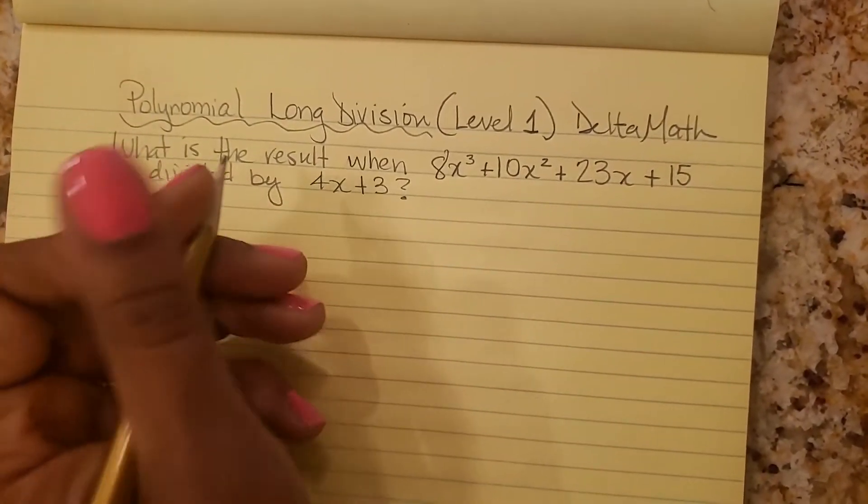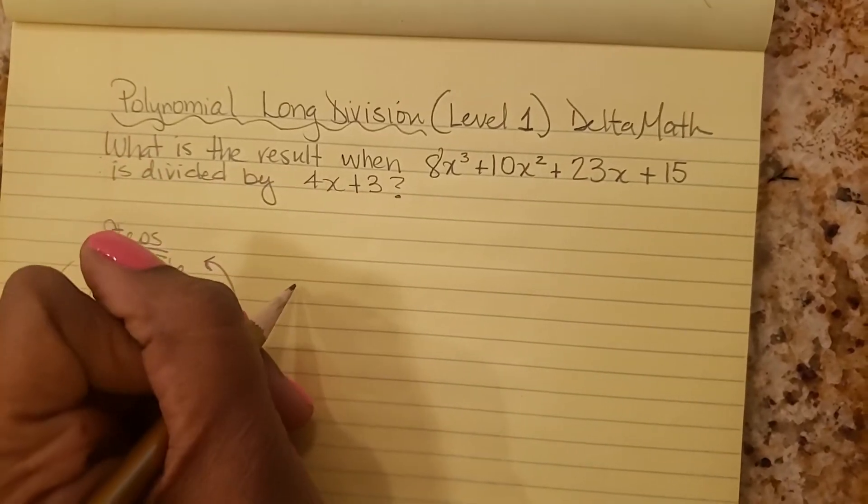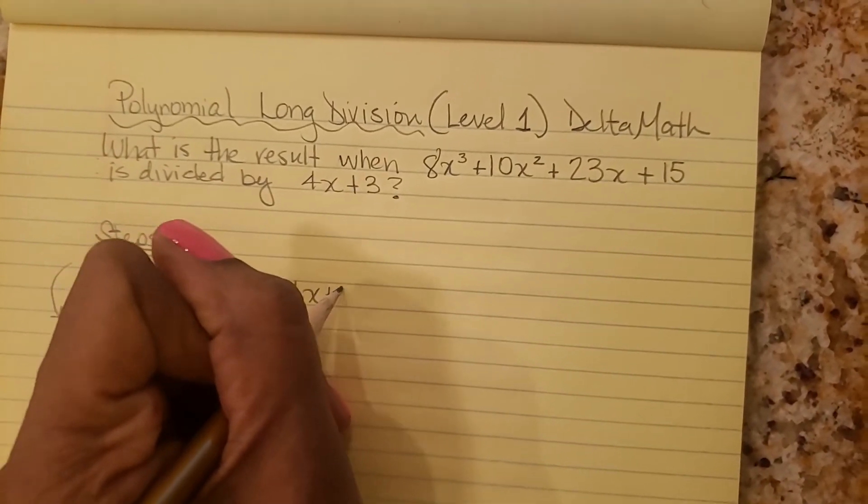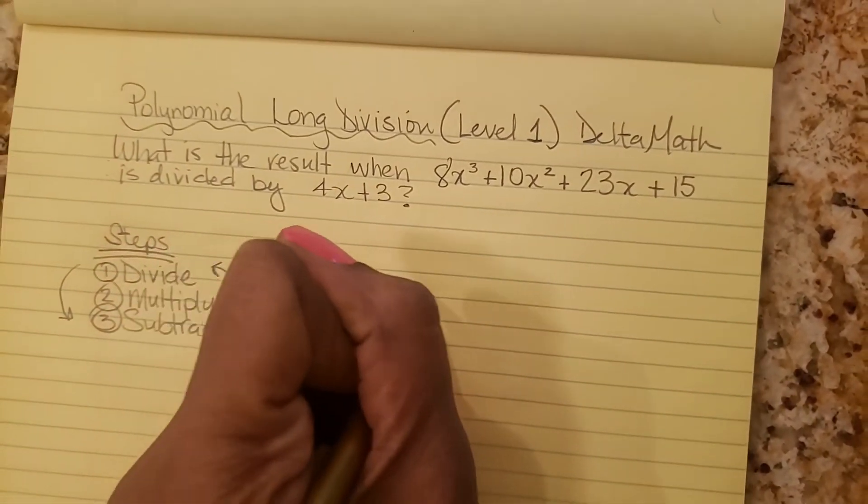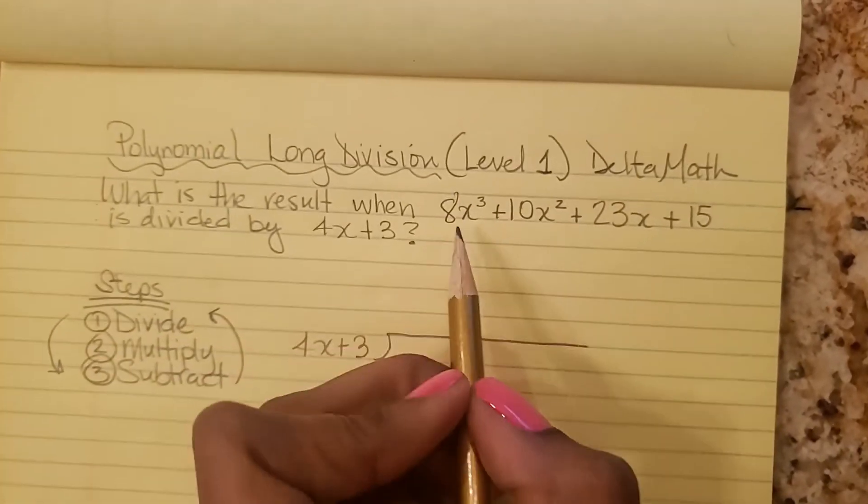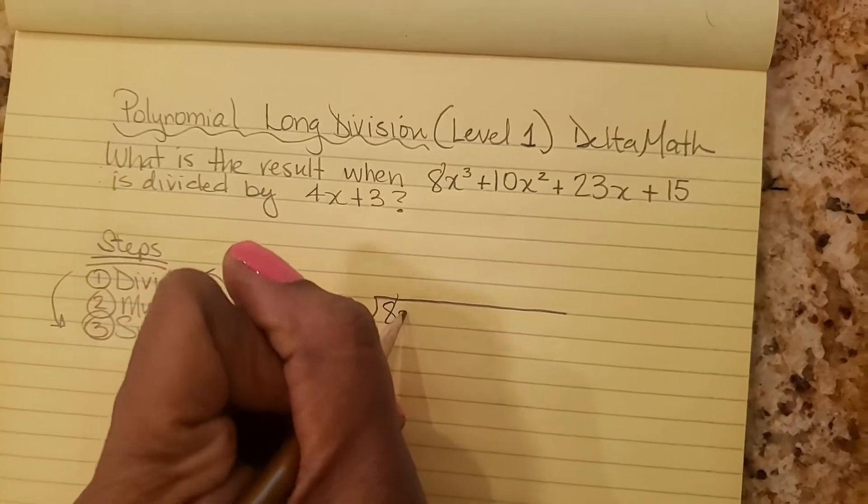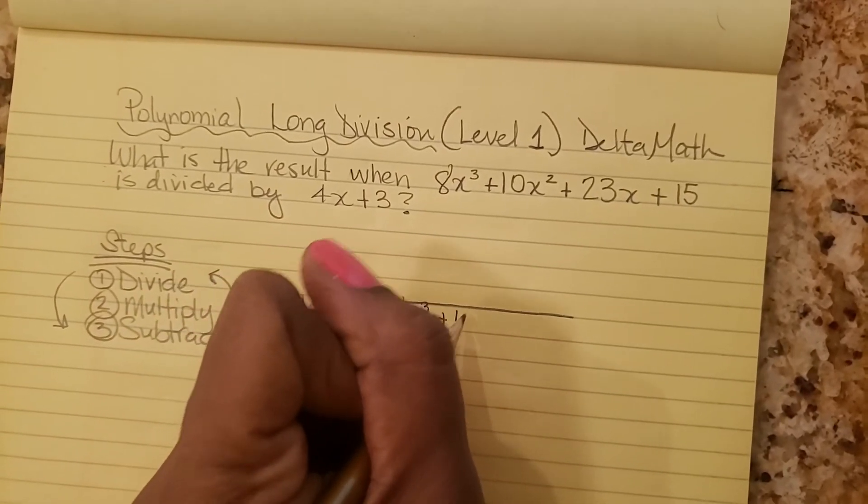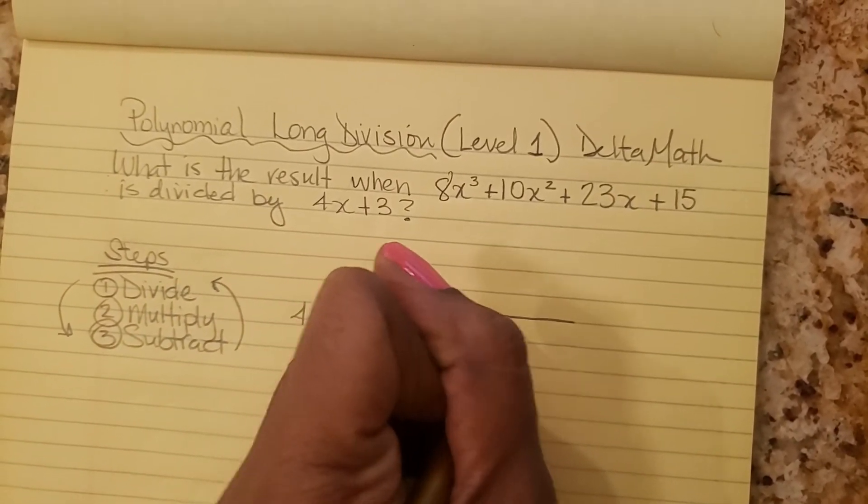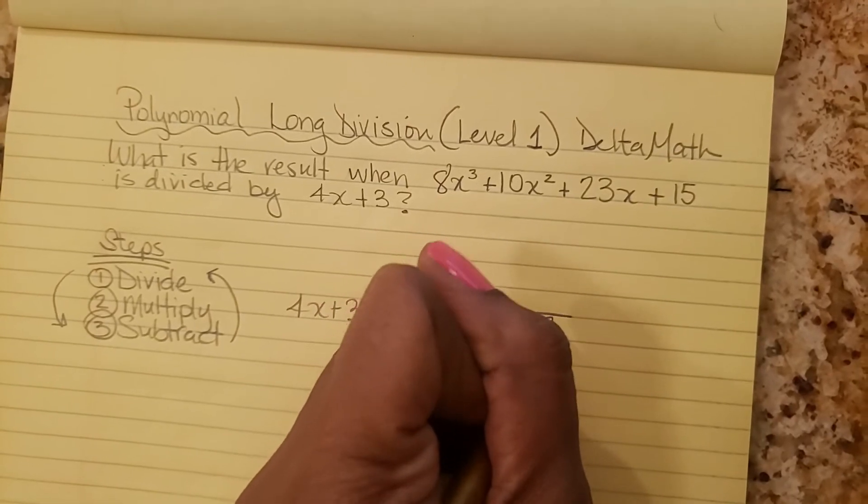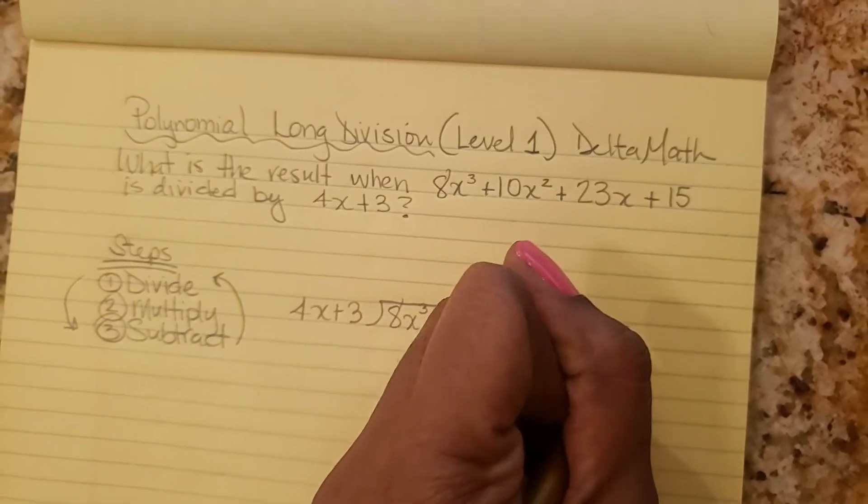So first you set it up. You put 4x plus 3 outside and you write this whole thing underneath: 8x cubed plus 10x squared plus 23x plus 15.